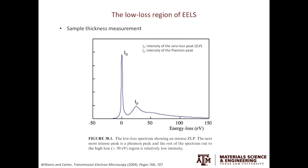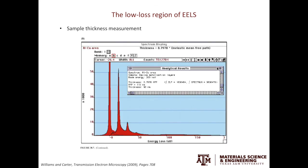Last but definitely not the least is sample thickness measurement using EELS. The equation is super simple: the sample thickness equals lambda_P times ln(IP / I0). Lambda_P is the mean free path of the plasmon in your material, so it is material specific. IP is the intensity of the plasmon peak, and I0 is the intensity of the zero loss peak. Here is an example from the textbook — by looking at the ratio of the zero loss peak and the first plasmon peak, you can estimate the sample thickness.